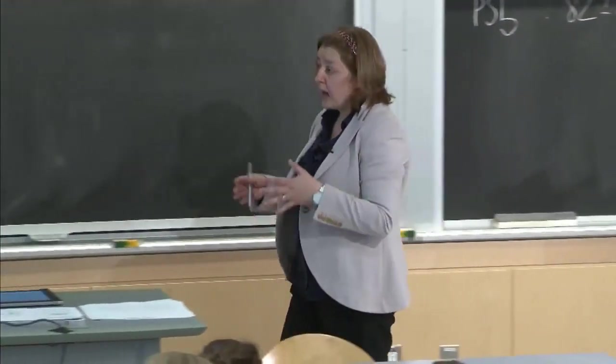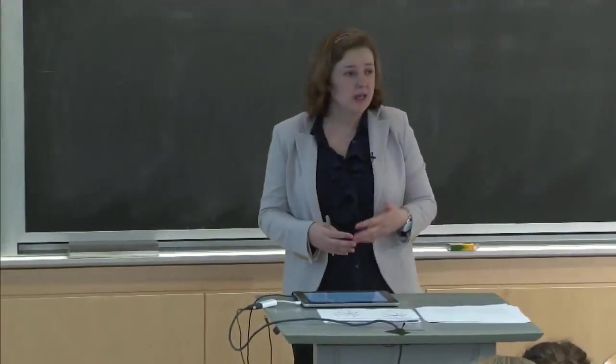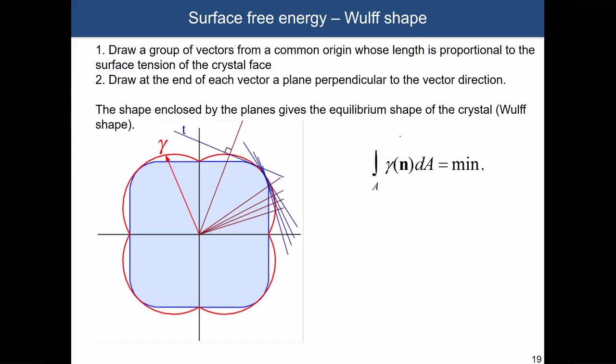For a given crystal, whether it's BCC, FCC, or hexagonal, you can simply calculate and plot the graph of the surface energies. In red, we are representing the surface energy for a given direction. This is just a two-dimensional cross-section of a crystal, and the length between the center of this construction and the red curve tells you the magnitude of the surface energy in that direction.